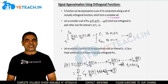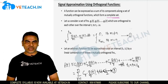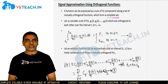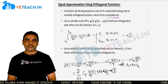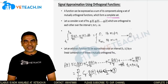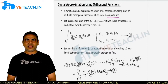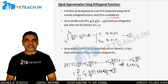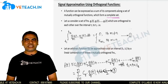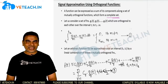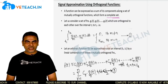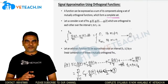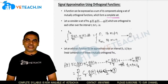Let us consider n number of mutual orthogonal functions over the interval t1 to t2 as g1(t), g2(t), and so on gn(t). According to the orthogonality condition, once they are orthogonal, they have to satisfy the condition: the integral from t1 to t2 of the dot product of two different signals must be 0.